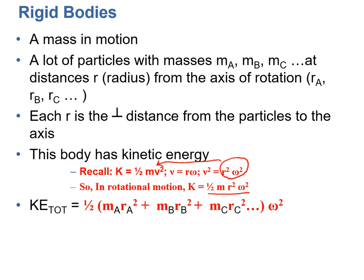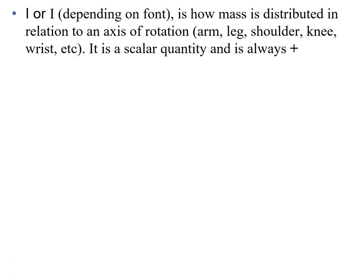Now what's inside the parenthesis is known as I, the moment of inertia. I is how mass is distributed—or I should say, the moment of inertia is how mass is distributed in relation to an axis of rotation, like an arm, a leg, shoulder, a knee. It is a scalar quantity, and it is always positive.